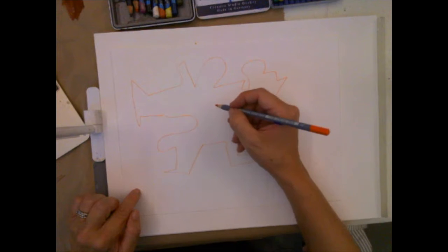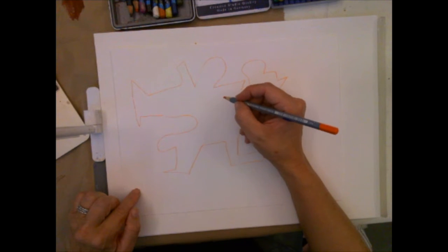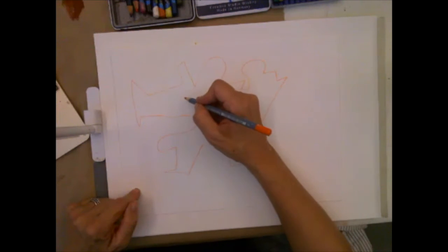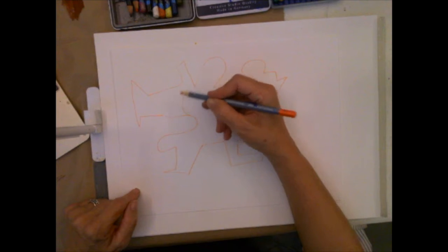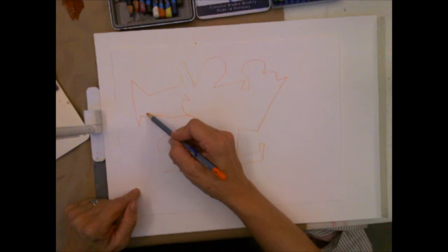Put a triangle in the middle. Okay, so now what you're going to do is try to connect the edges of the triangle to the outer edges of the shape.